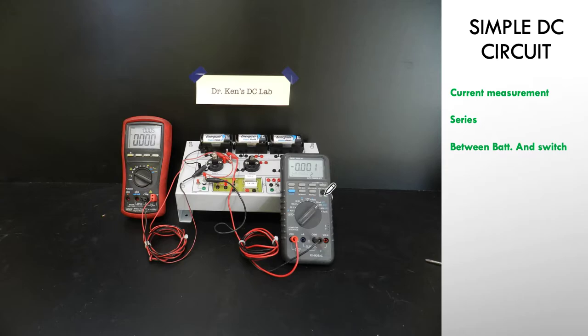So here's my second multimeter set up as an ammeter. And again, this is on, you can probably just read it, DCA, DC current.